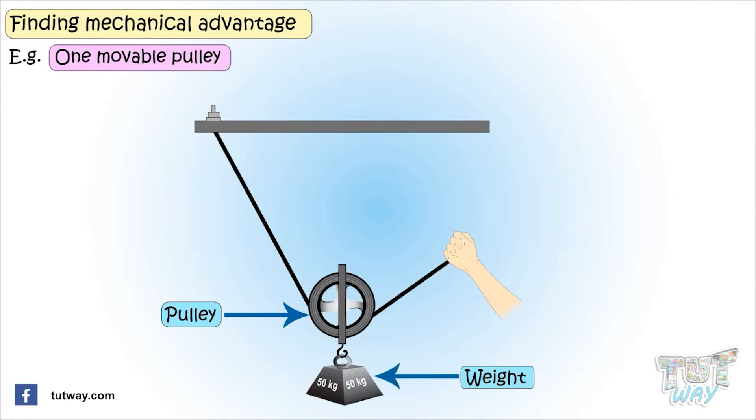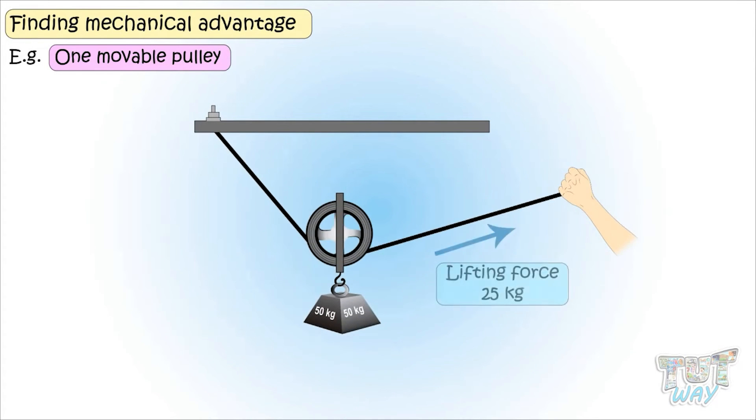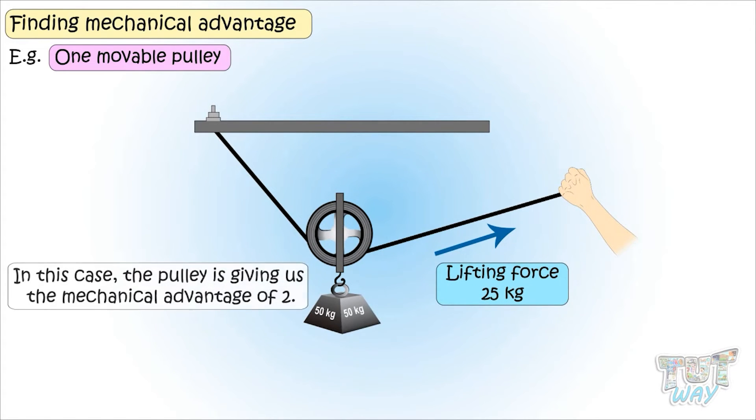Here, the weight of the object is equally divided between the pulley and the fixed end of the rope, and in order to lift a weight of 50 kg, 25 kg effort is required. That is, it is giving us a mechanical advantage. Here, the force applied is being multiplied by 2. So, we say mechanical advantage of 2 is there in case of one movable pulley.